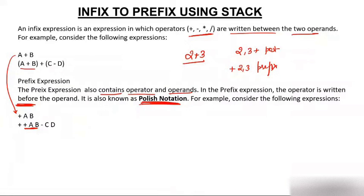For example, consider the expression a plus b — that is infix. Writing the plus before the operands gives the equivalent prefix expression: +ab. So a plus b becomes +ab. Similarly, c minus d becomes -cd, and combining them gives the equivalent prefix expression.